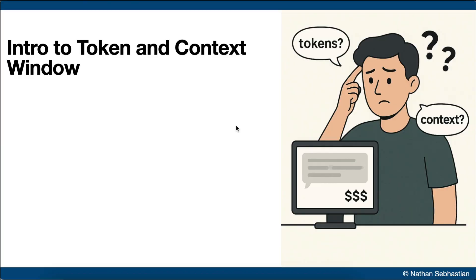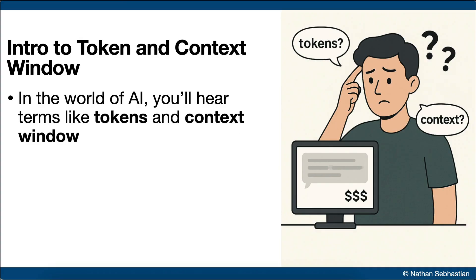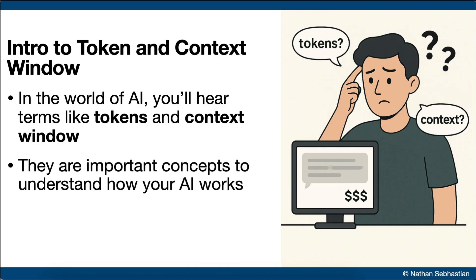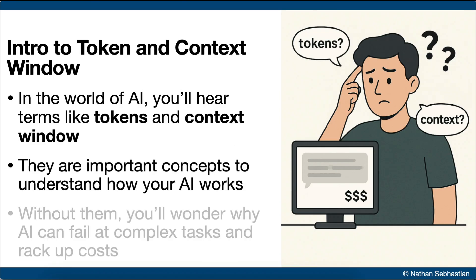Along the way, you'll also get a better idea of how AI models work and why they can fail when working on a large project. As you step into the world of AI-assisted software development, you'll eventually come across terms like usage tokens and context window. And if you don't understand what they mean, it's easy to get confused about why your AI struggles with complex tasks or gets expensive fast. So let's look at a simple explanation.